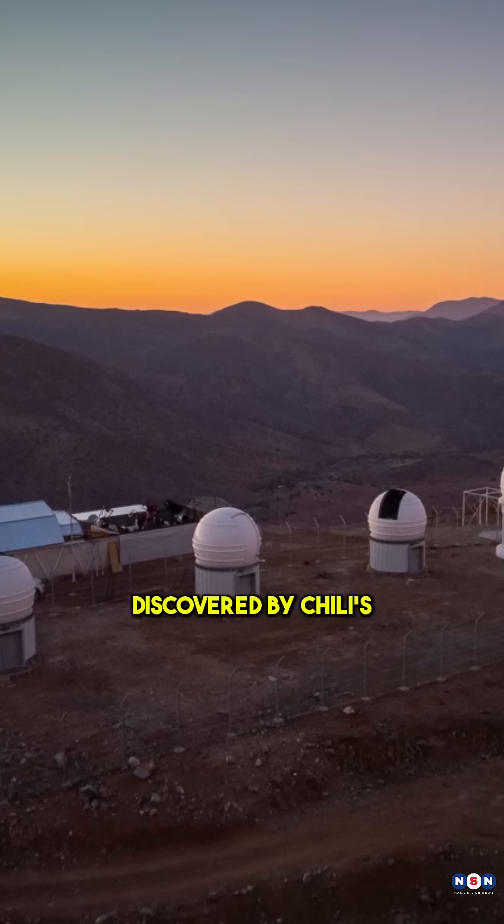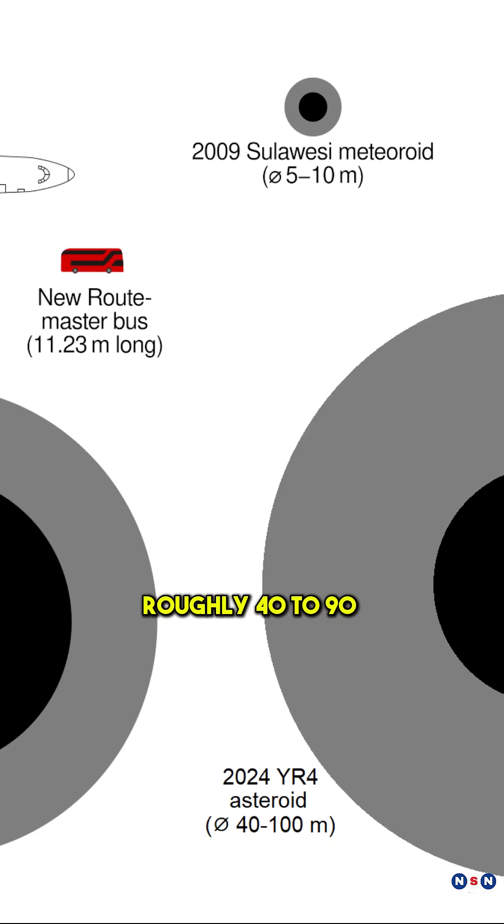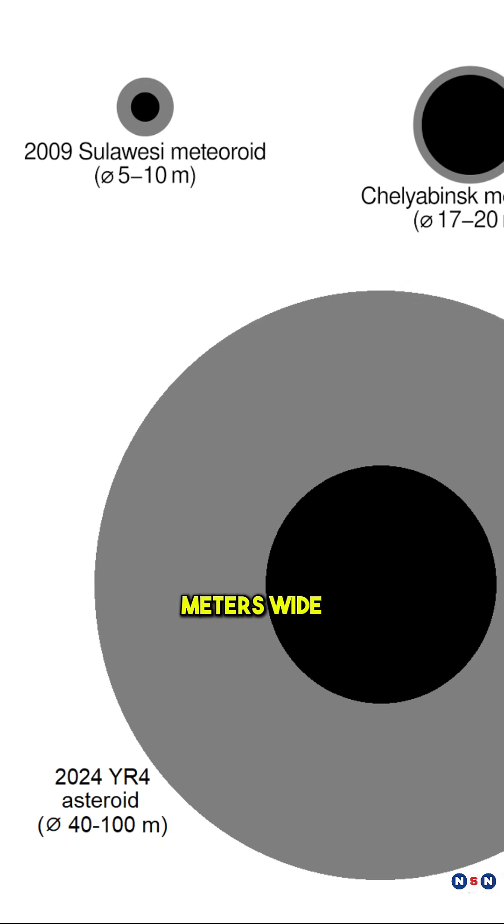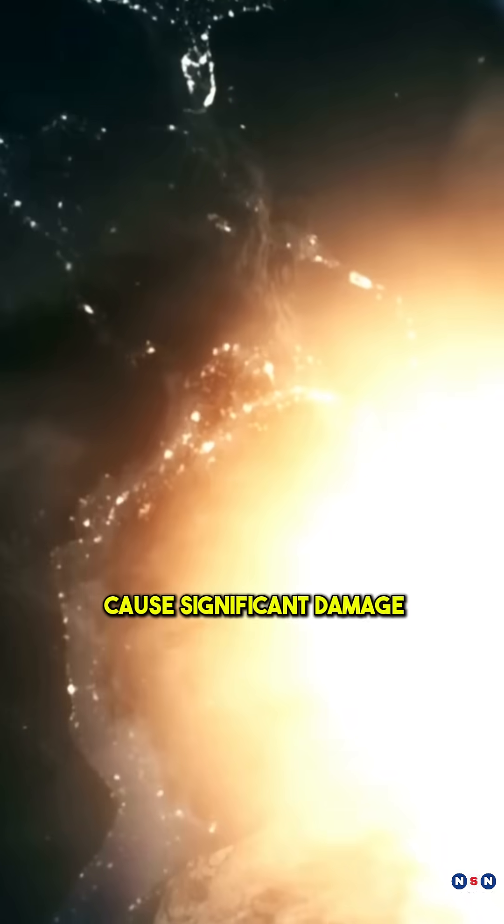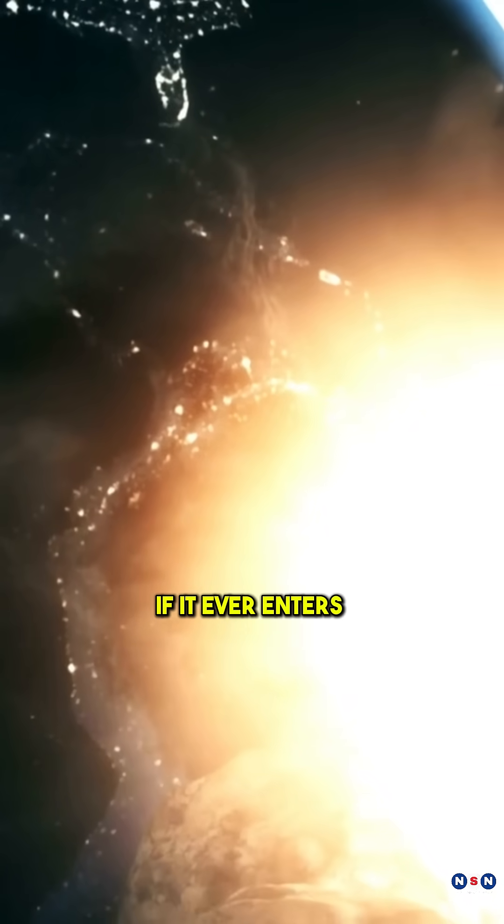Discovered by Chile's Elsass Observatory, this near-Earth object, roughly 40 to 90 meters wide, has captured the attention of scientists worldwide due to its potential to cause significant damage if it ever enters Earth's atmosphere.